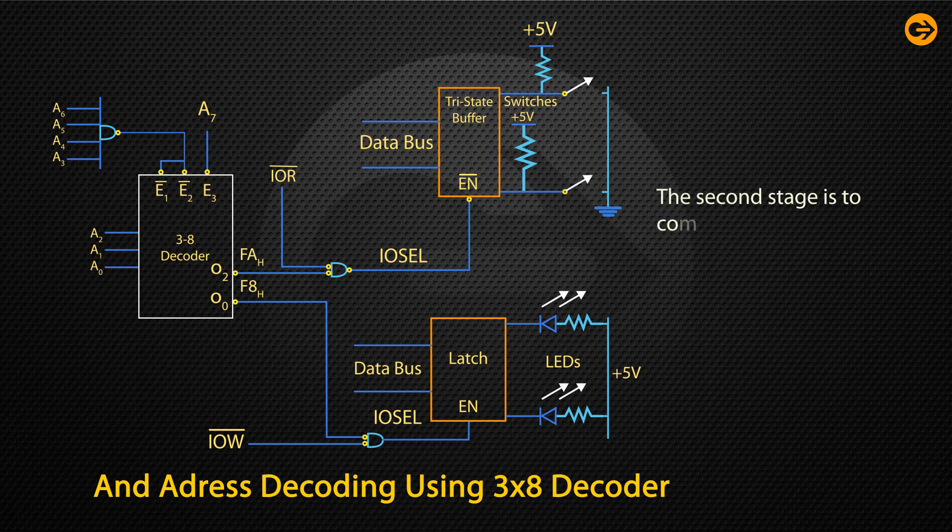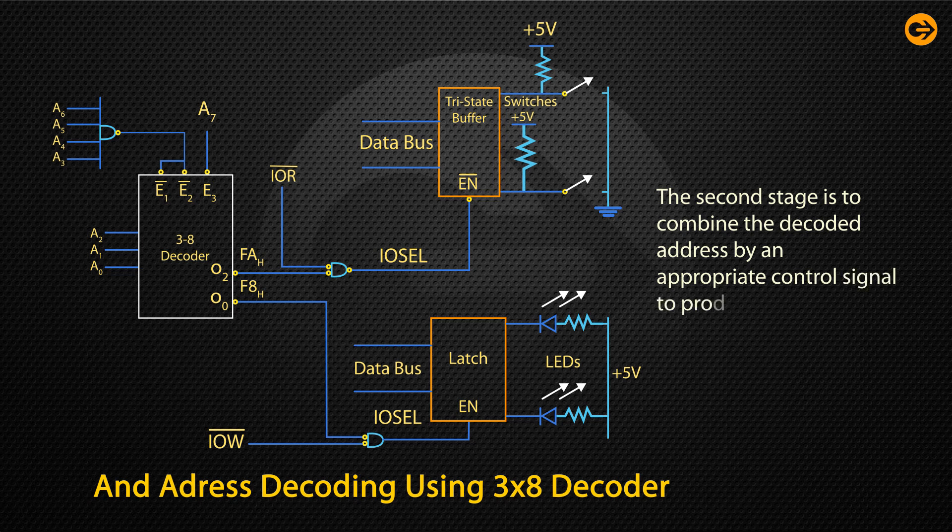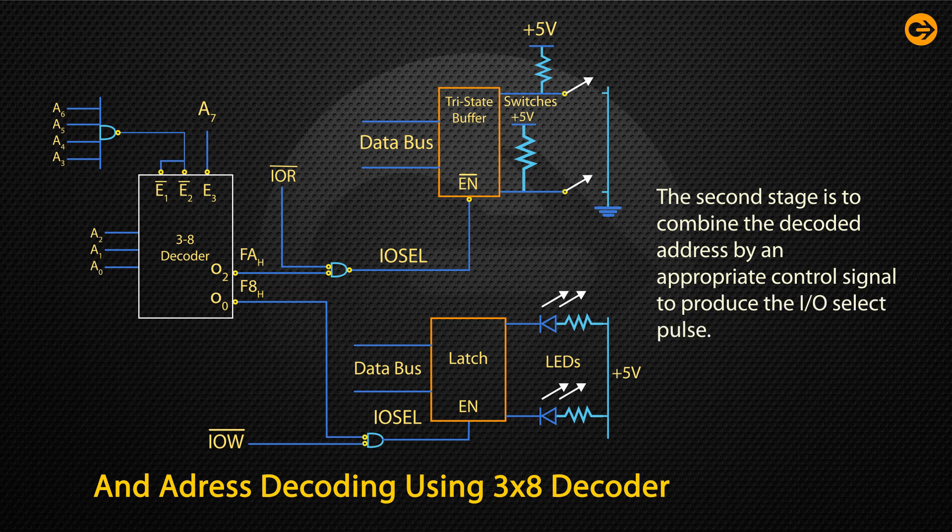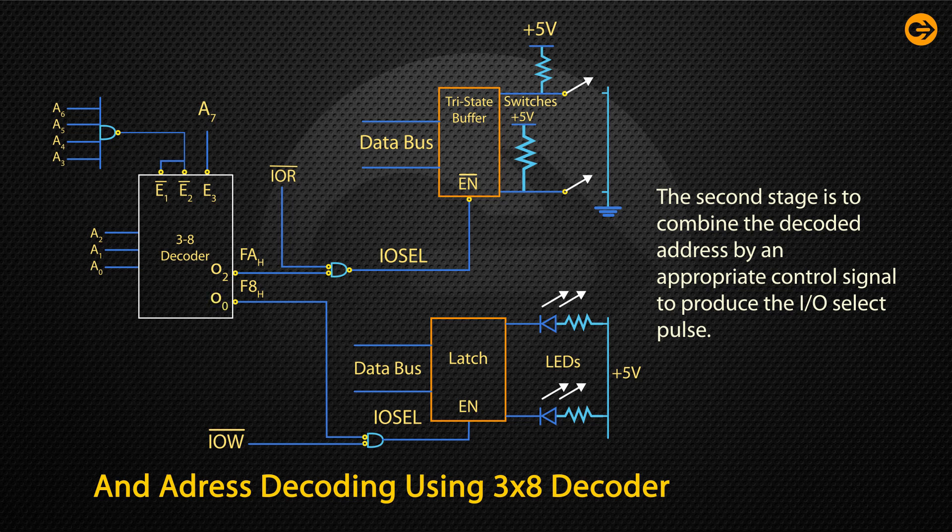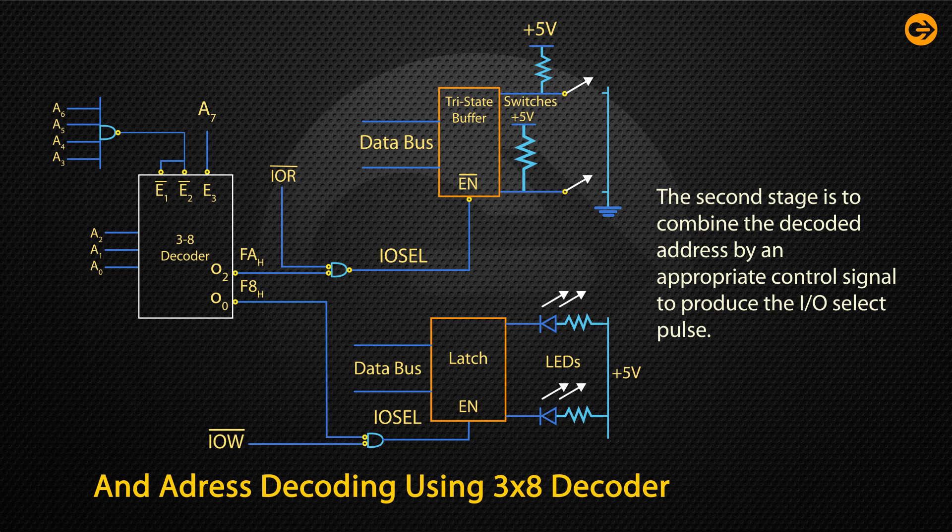The second stage is to combine the decoded address by an appropriate control signal to produce the I/O select pulse. Figure illustrates that the output O0 of the decoder is logically ANDed in a negative AND gate with the I/O W bar control signal. The output of the gate is the I/O select pulse for an output port.